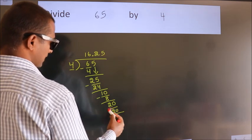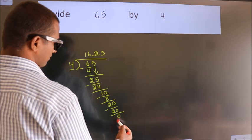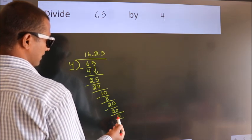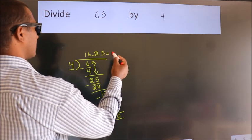Now we subtract. We get 0. We got remainder 0. So this is our quotient.